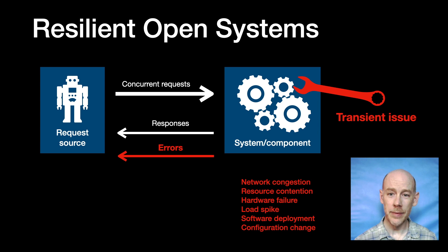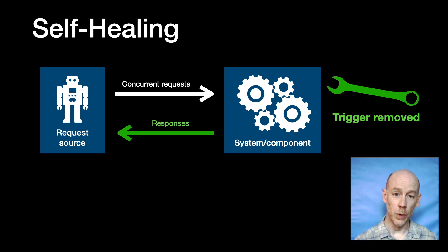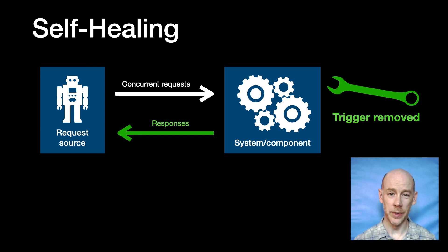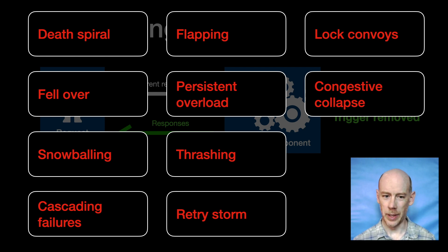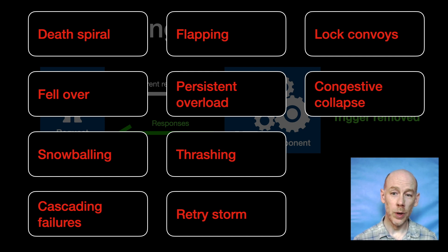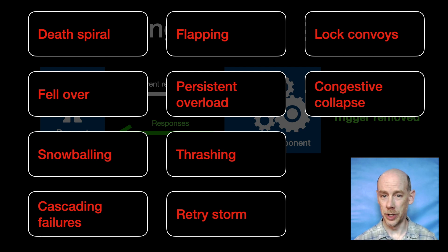Self-healing means that even if a transient issue causes user-visible errors, once the trigger is removed, the errors stop. Of course, we have a lot of terms for what happens when the system doesn't self-heal — a death spiral, the system fell over, it snowballed. Generic terms like cascading failure, flapping, or persistent overload. Maybe we know a bit more about the actual feedback loop, so we call it thrashing, a retry storm, a lock convoy, or congestive collapse. I've heard all these terms used to describe failures that follow a similar pattern.